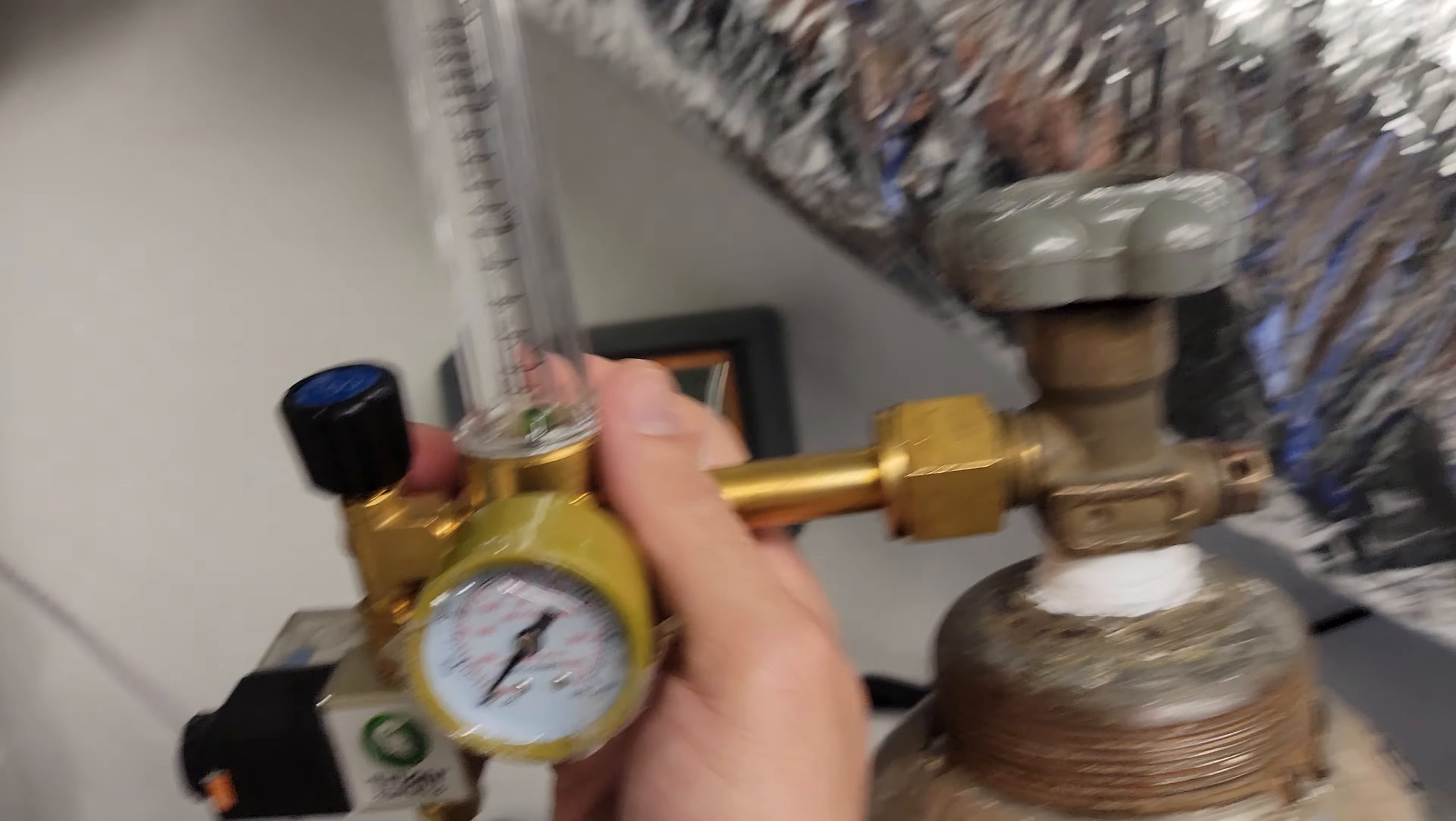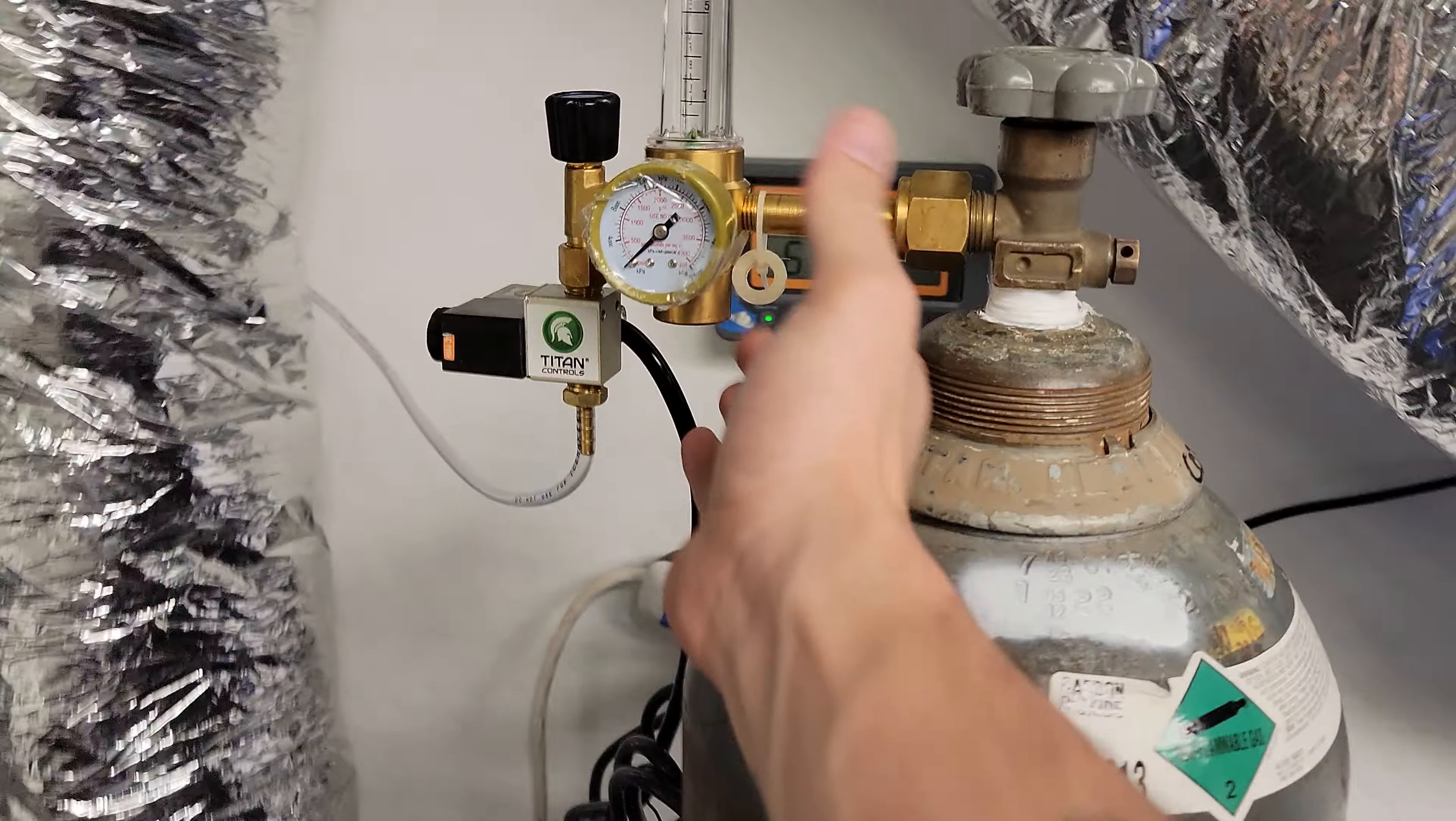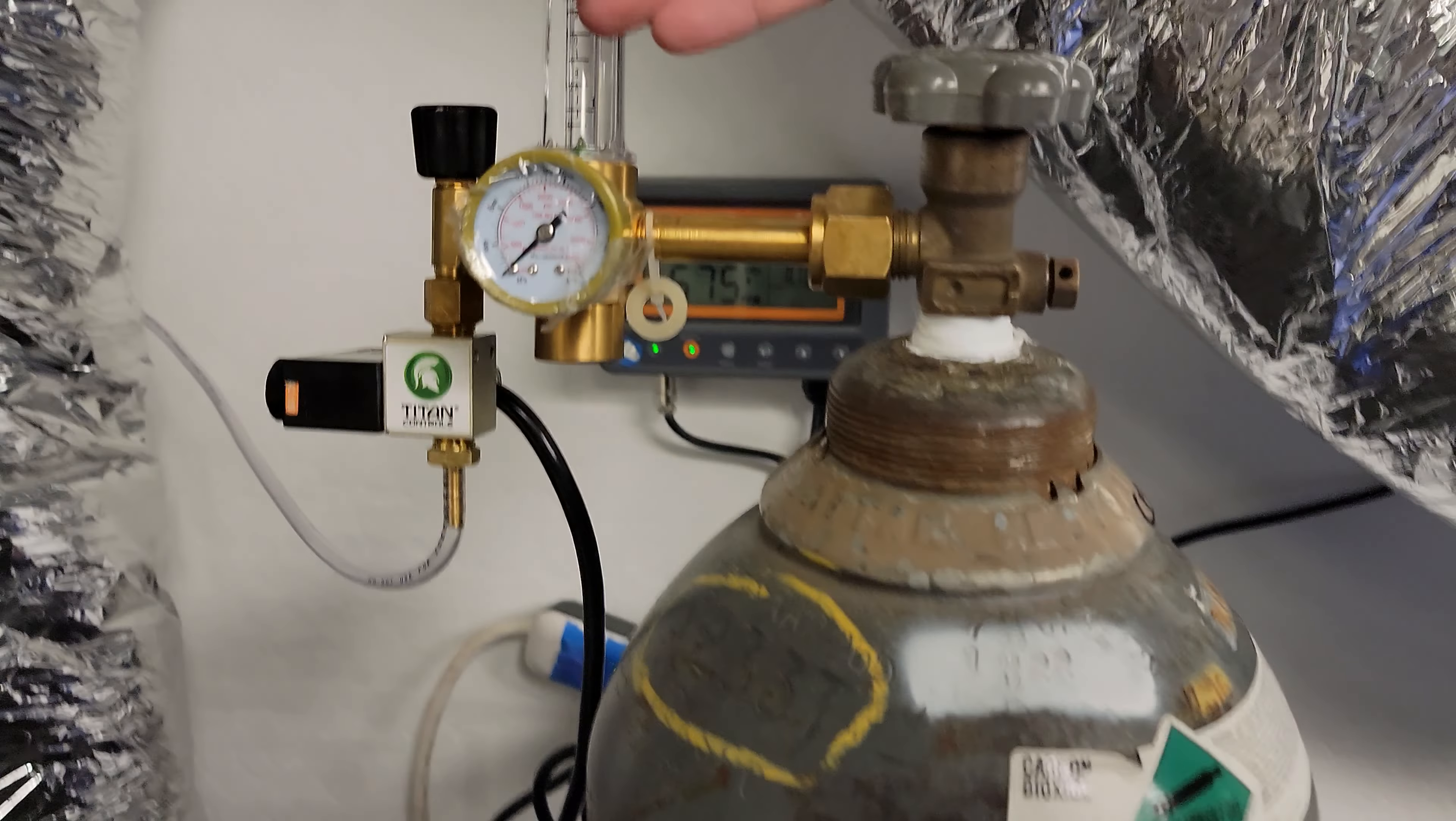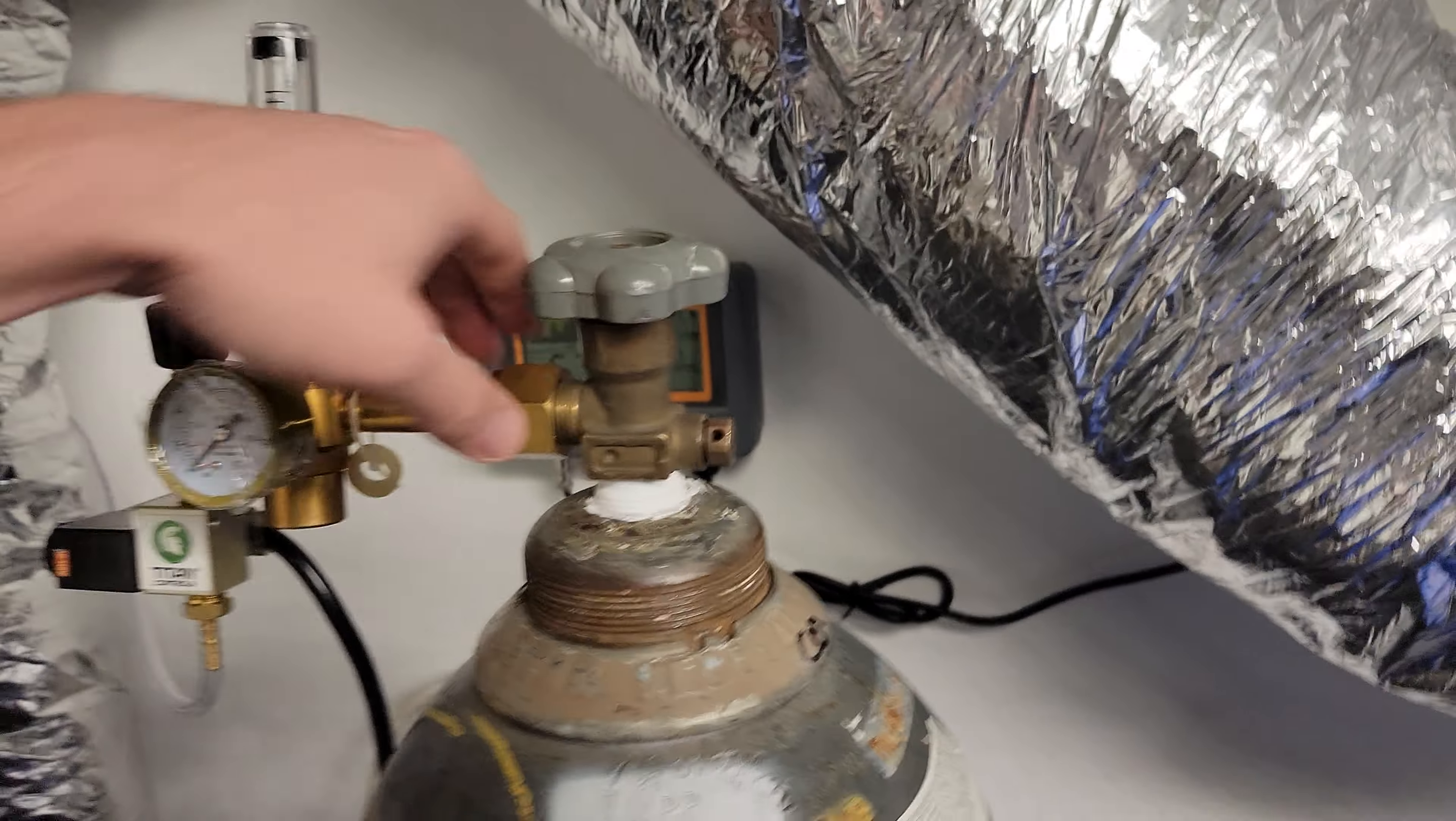You mostly just want to hand-tighten these because these fittings are brass, they're really weak. Tighten it; you'll probably want to tilt this back a little bit because as you tighten it'll rotate it forward, so that way the gauge isn't facing towards the ground. Hand-tighten this as much as you can.